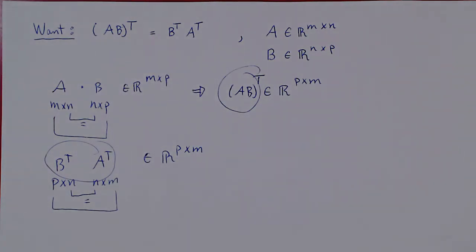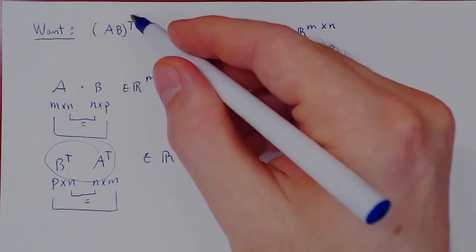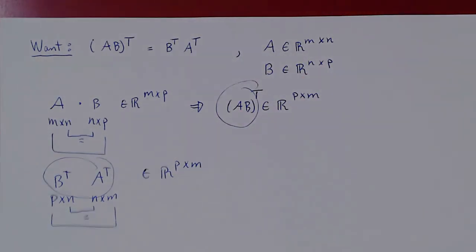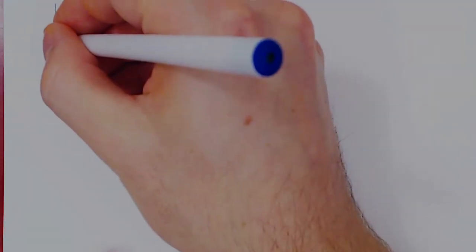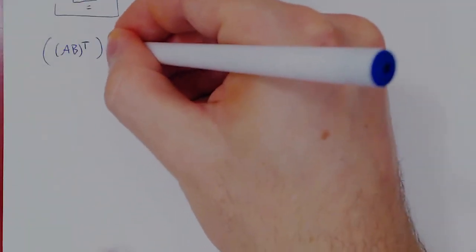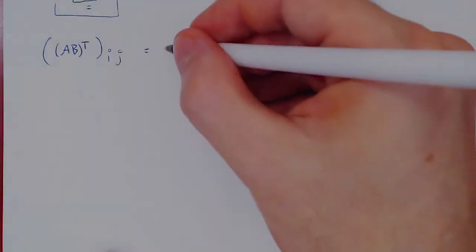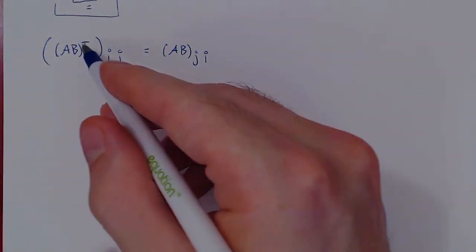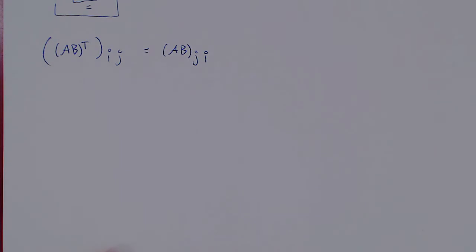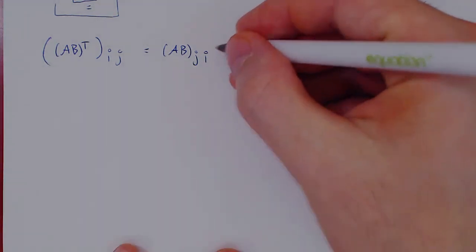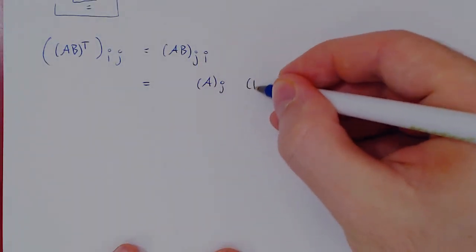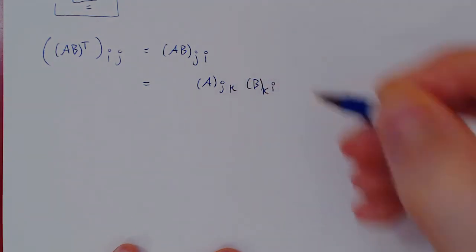The second part is we have to have the same corresponding entries. Take the entry of AB transposed in the Ith row, Jth column. This is simply the entry of AB in the Jth row, Ith column, because the transpose is the action of swapping rows for columns and columns for rows. We can now expand: we take the entries of A in the Jth row, the entries of B in the Ith column, multiply corresponding entries, and add them up.